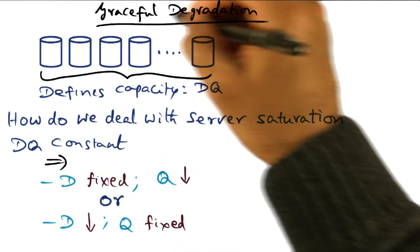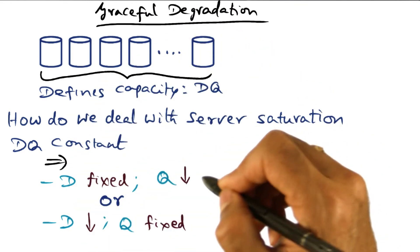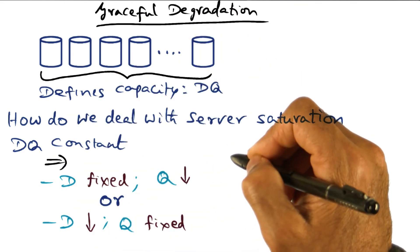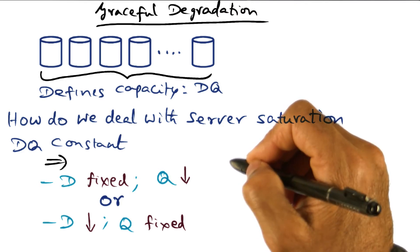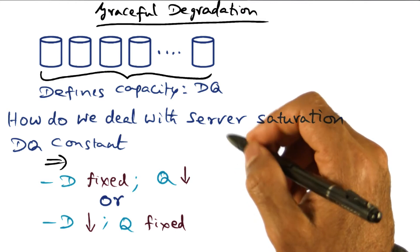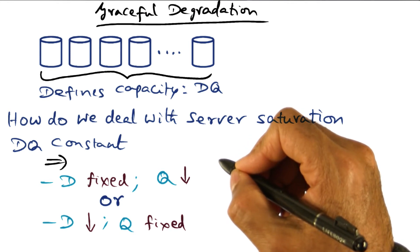Because DQ is a constant, it allows us to gracefully degrade the service being provided by the server, depending on the choice that we want to make in terms of fidelity of the results or the yield that we want to provide to the user community. In other words, the DQ principle gives us an explicit strategy for managing saturation.